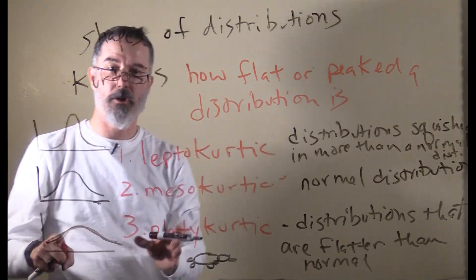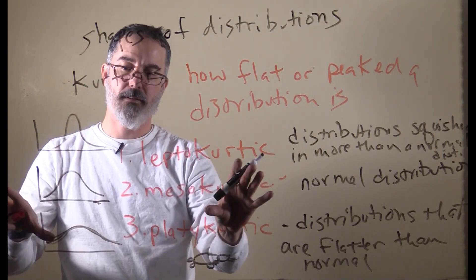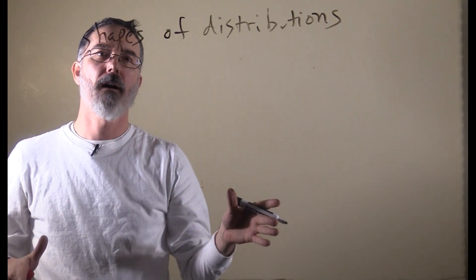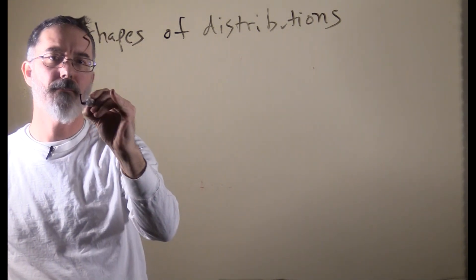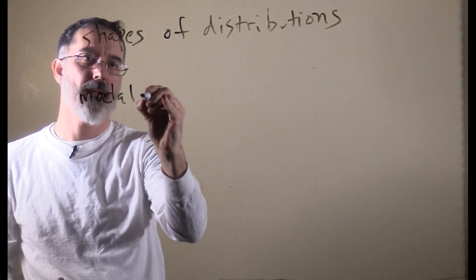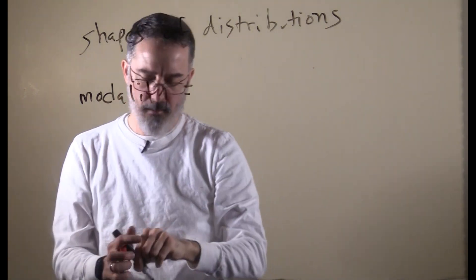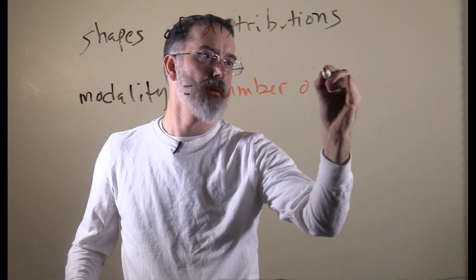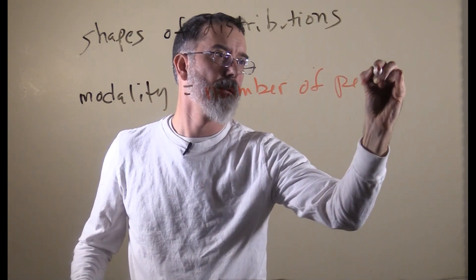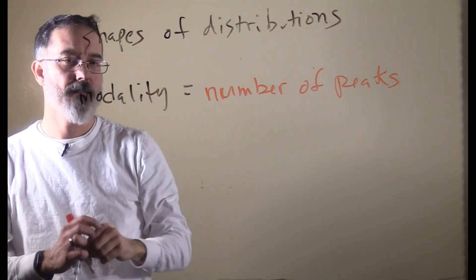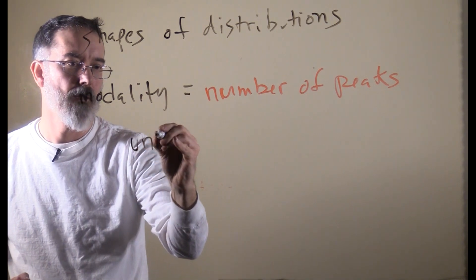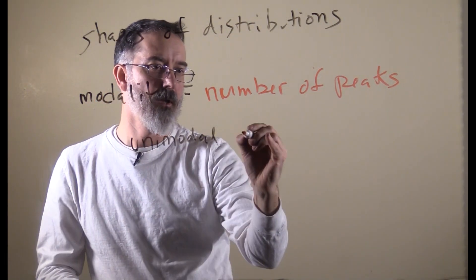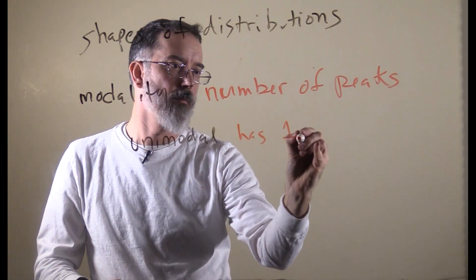Notice these can be symmetrical, so skew and kurtosis are pretty much unrelated to each other. Another important feature of the shapes of distribution is the distribution's modality, and that refers to the number of peaks that a distribution has.